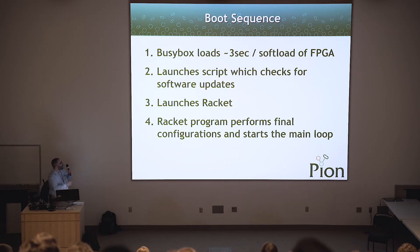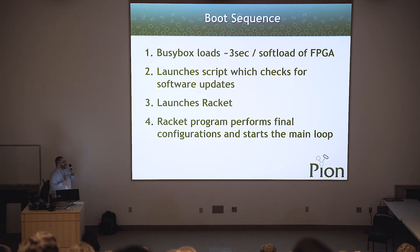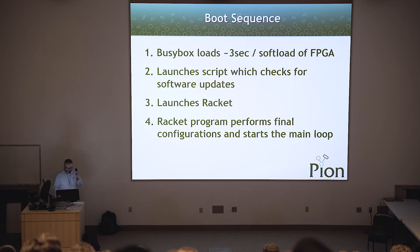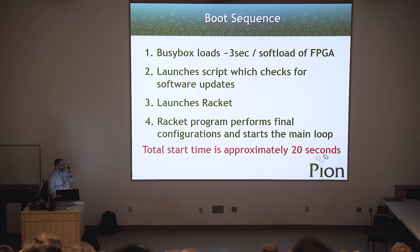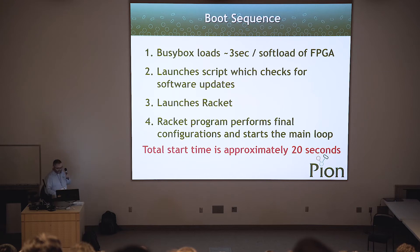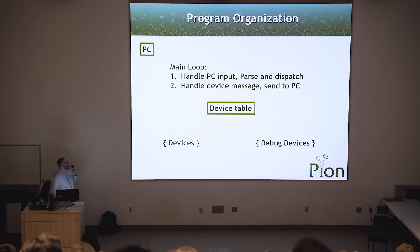The boot sequence is roughly: the BusyBox OS loads in less than three seconds, during which it soft-loads the FPGA with whatever custom code you have. Then it launches Racket, which does the last configuration. Racket startup time is a little slow, so the total time is about 20 seconds from power on — Racket takes about 15 to 17 seconds to get up and running, which is a little unfortunate, but that's what we have.